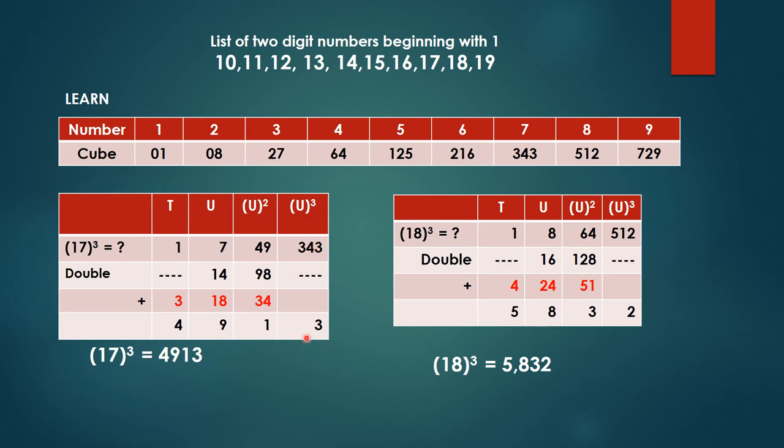Same thing, 343, 34 carried over and 3 over here. Now 49 plus 98 plus 34 will give us 181. So 18 is carried over and 1 is over here. Then 7 plus 14 plus 18 gives us 39, so 9 is over here, 3 carried forward.